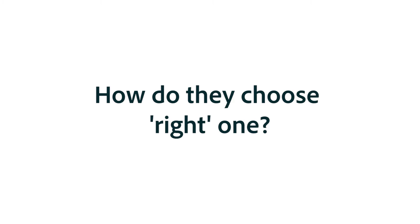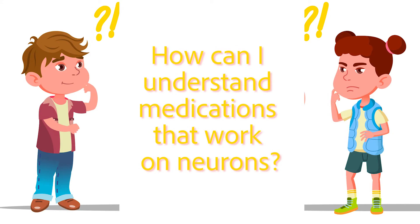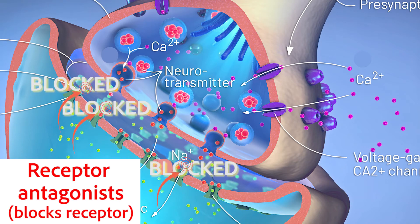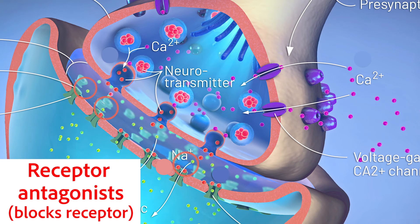The prescriber would just need to choose the one with the least side effects and most benefits for the specific person being treated. Understanding medications that work on neurotransmission is one of the most difficult areas of pharmacology, but if you understand the imbalance that has occurred and the neurotransmitters involved, you're much closer to conquering an understanding of the drugs that work on neurons. For emesis, it's complicated by the fact that there are four separate pathways.